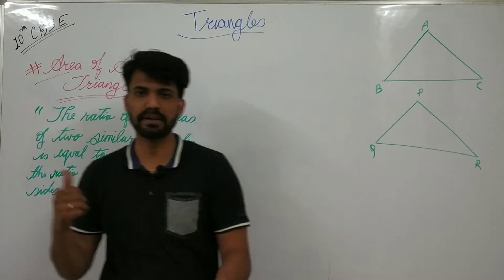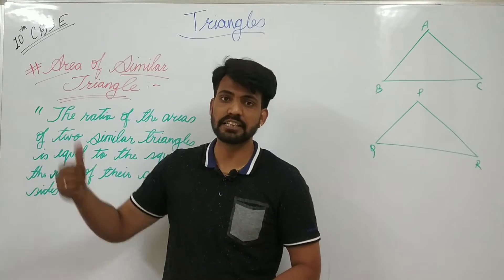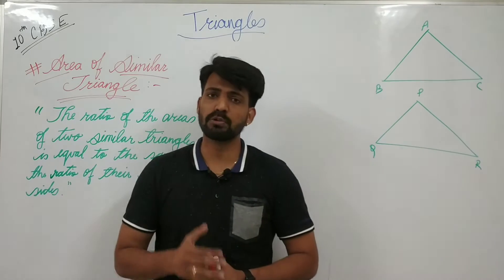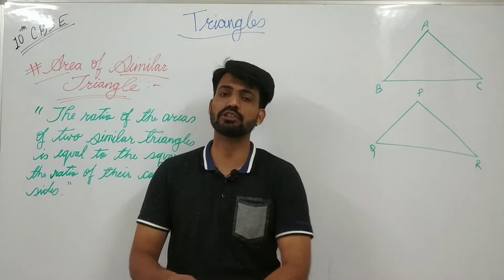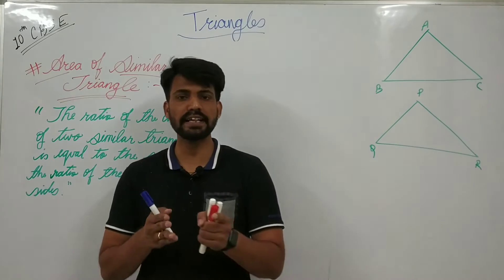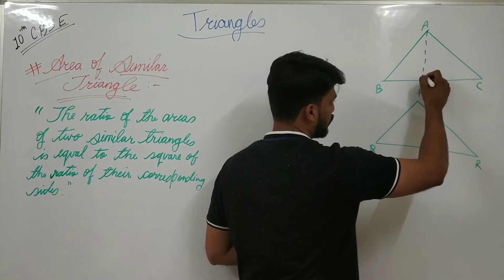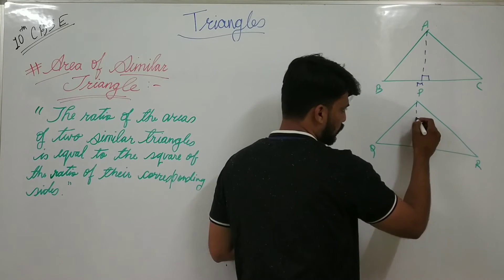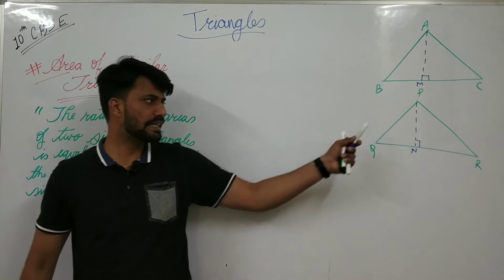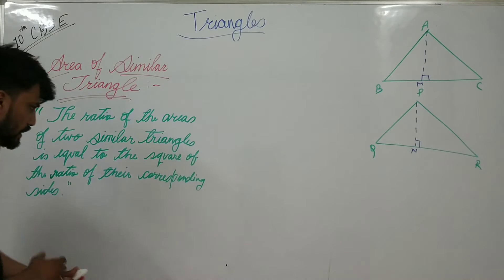These two triangles ABC and PQR are similar as given. I need to construct the heights inside them because to find the area ratio, I need base and height, since the area formula is half into base into height. So taking BC as the base of triangle ABC, I draw height AM perpendicular to BC, and for triangle PQR, I draw height PN perpendicular to QR. So AM is the height of triangle ABC and PN is the height of triangle PQR.